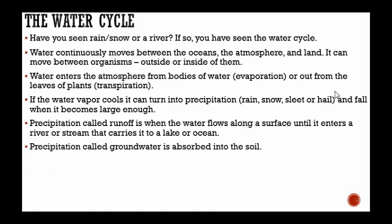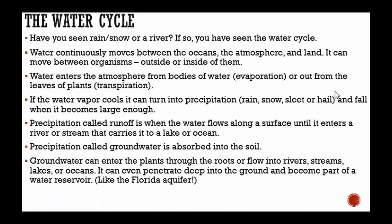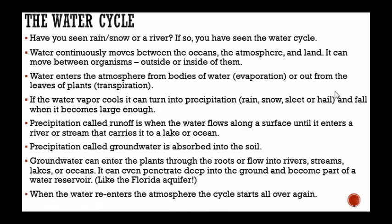Precipitation called groundwater is absorbed into the soil. Groundwater can enter plants through the roots or flow into rivers, streams, lakes, or oceans. It can even penetrate deep into the ground and become part of a water reservoir like the Florida aquifer. When the water reenters the atmosphere, the cycle starts all over again. All these water molecules — this H2O — are just being recycled over and over. We're not getting more or less rain on Earth. It's all happening over and over, though certain parts may get more or less rain during certain seasons. All that water has been here since the beginning.